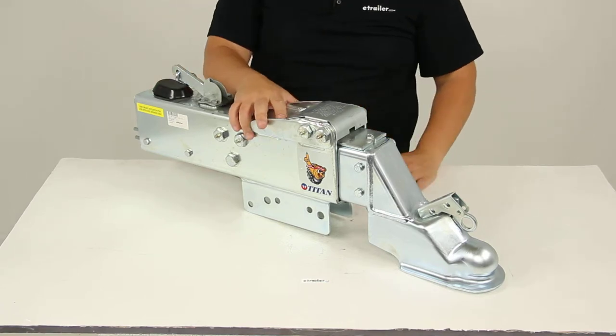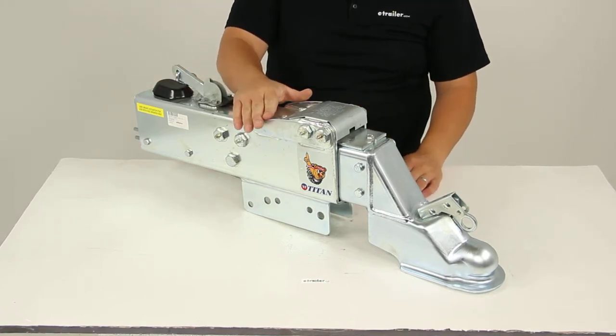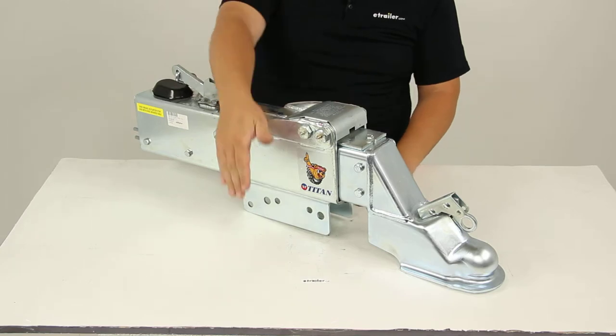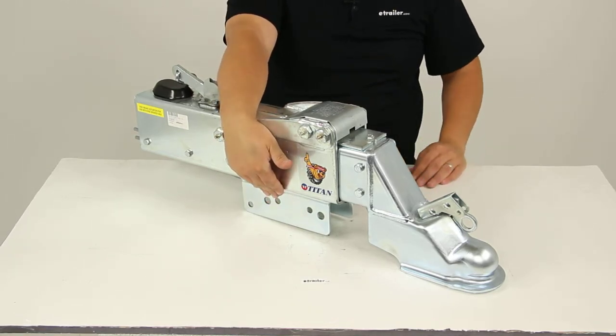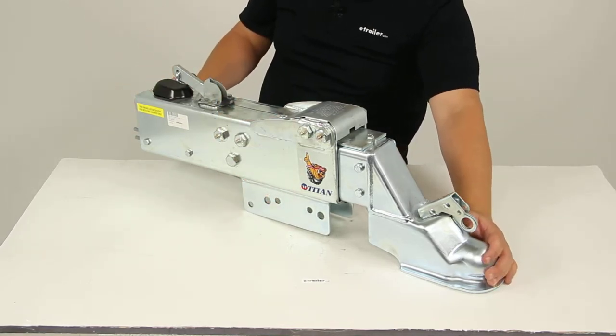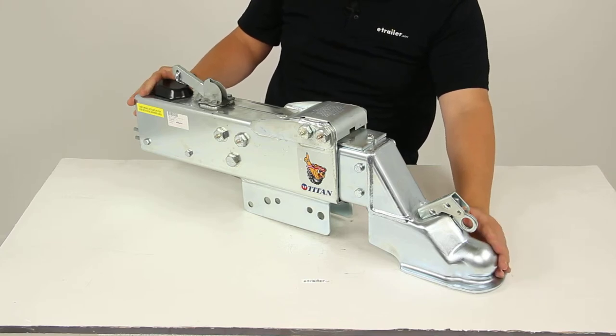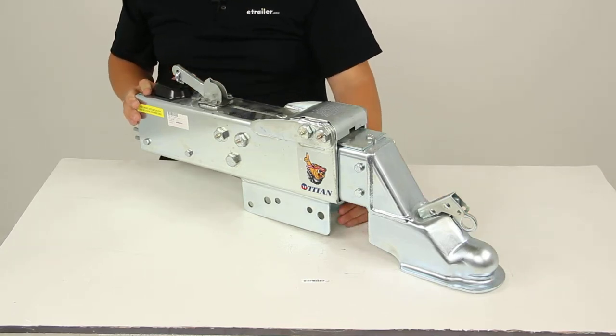This does have a nice zinc-plated finish on it, so it is going to provide ultimate resistance against corrosion. Again, it is that bolt-on install. It is designed to work with disc brakes. Again, the ball size is a two and five-sixteenth inch hitch ball, three-inch drop.